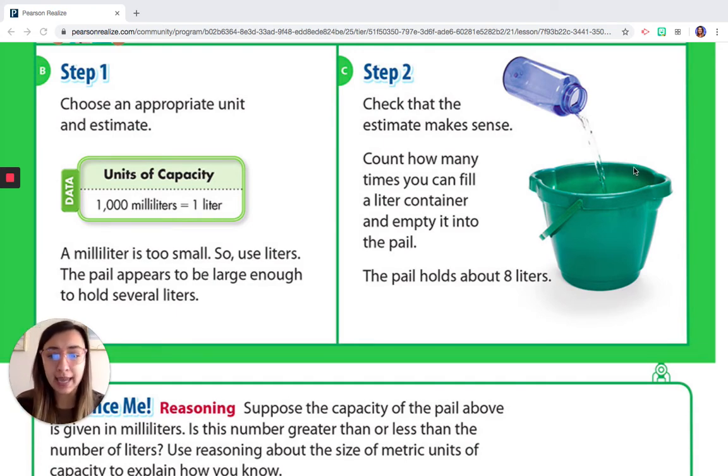If we are going to fill up this big pail, do we want to take a thousand dropperfuls of water and put it into that pail? No, we do not want to do that. It would take forever. So what is easier is we can use our bigger measurement or our liters to do so. So just like it says down here, it says a milliliter is too small. So we're going to use liters. The pail appears to be large enough to hold several liters.